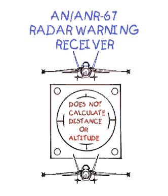The Radar Warning Receiver does not display nor calculate altitude or range, only azimuth and strength. There is no way to tell if a contact is above or below you. The Radar Warning Receiver filters out friendly contacts by using IFF and therefore only shows hostile or possibly hostile contacts.